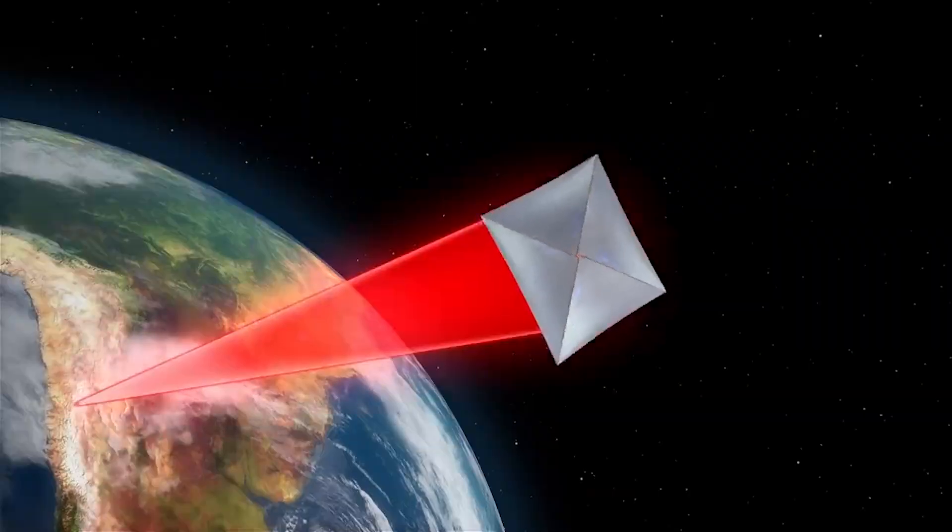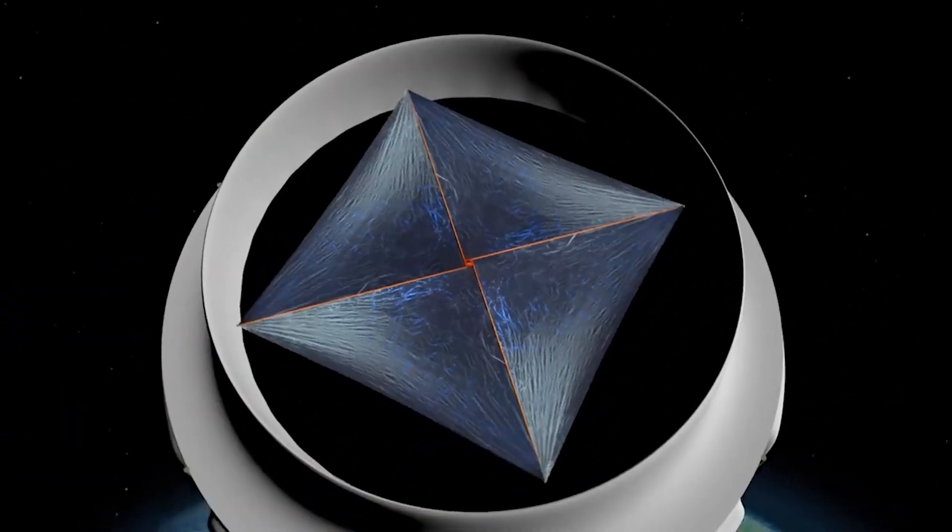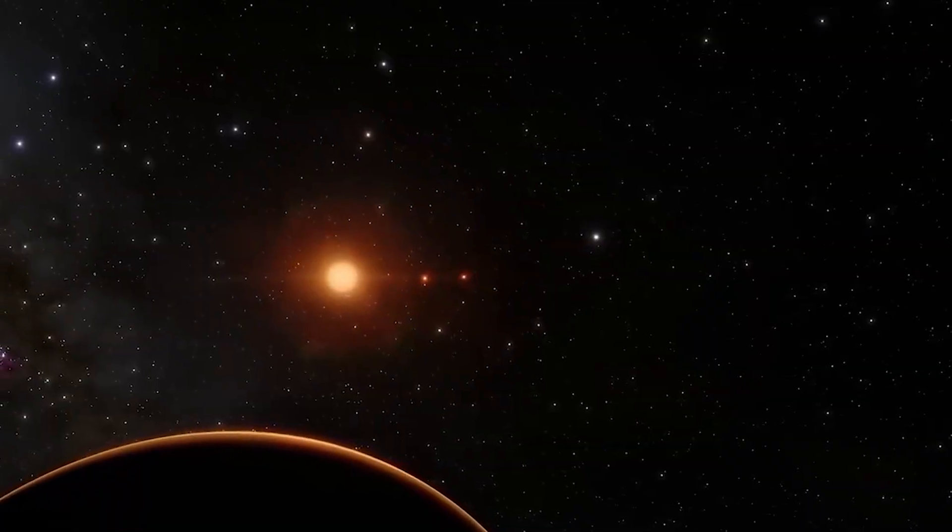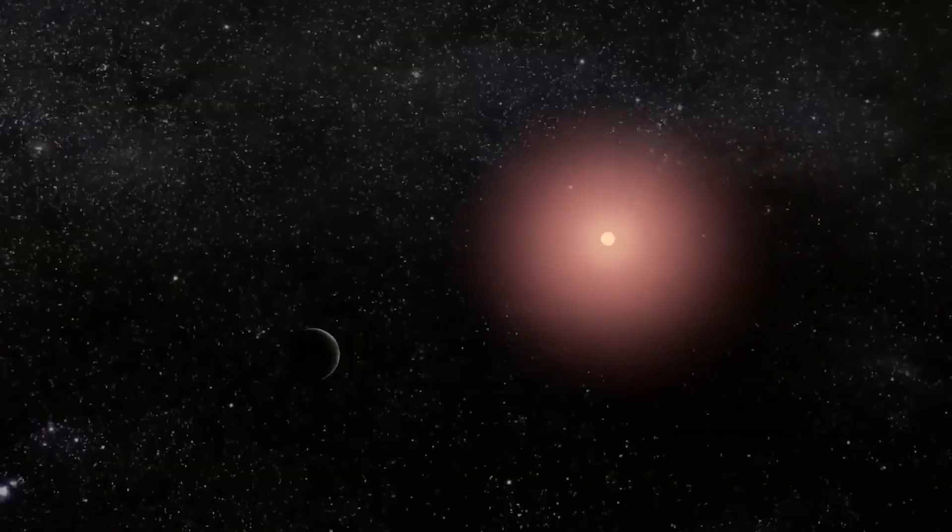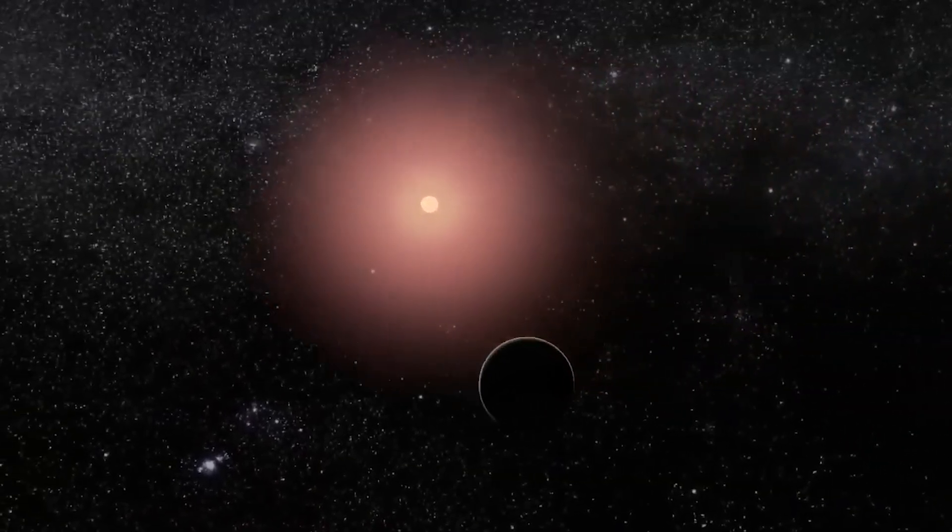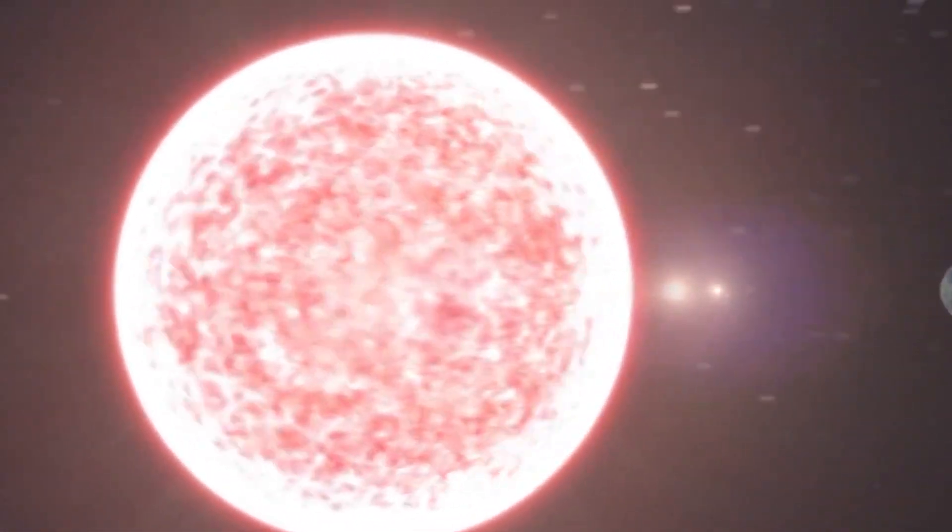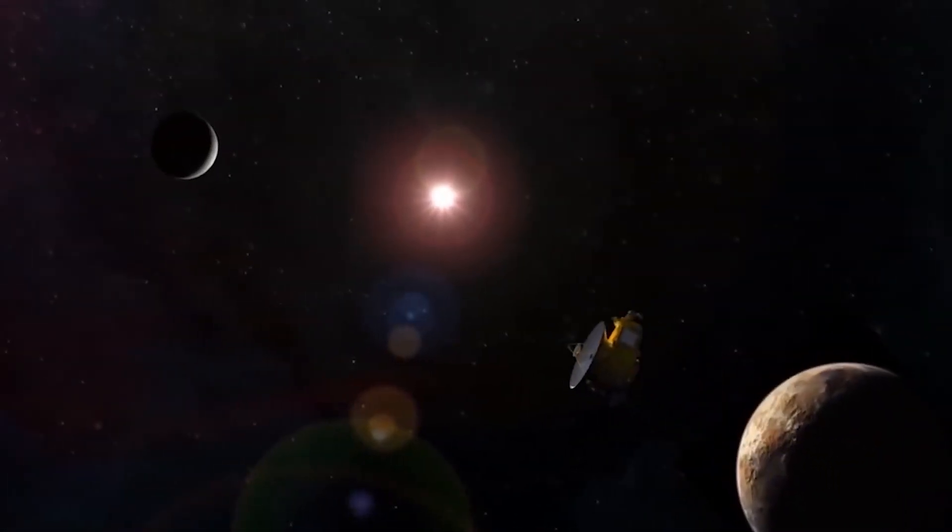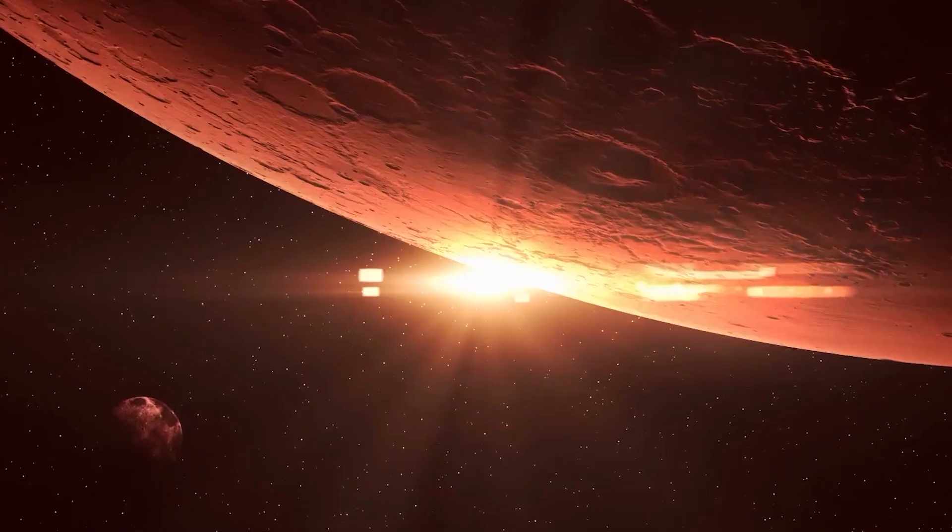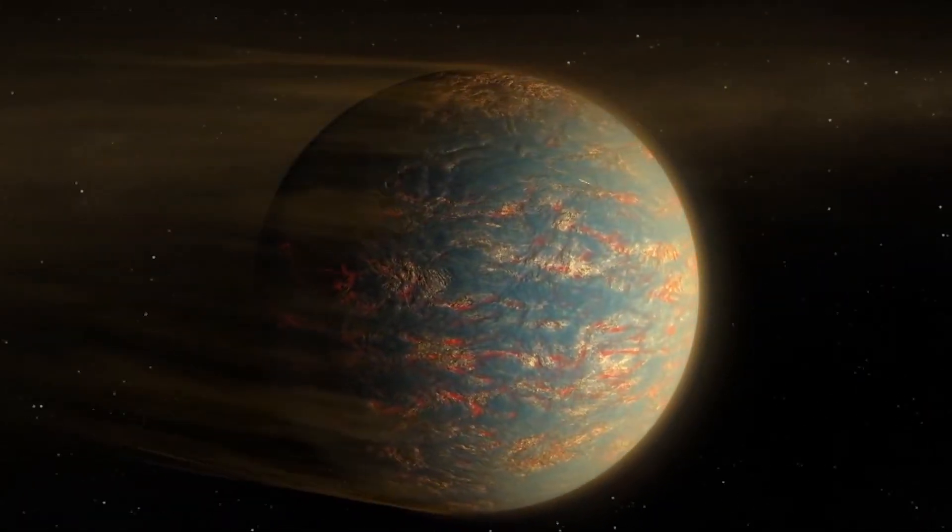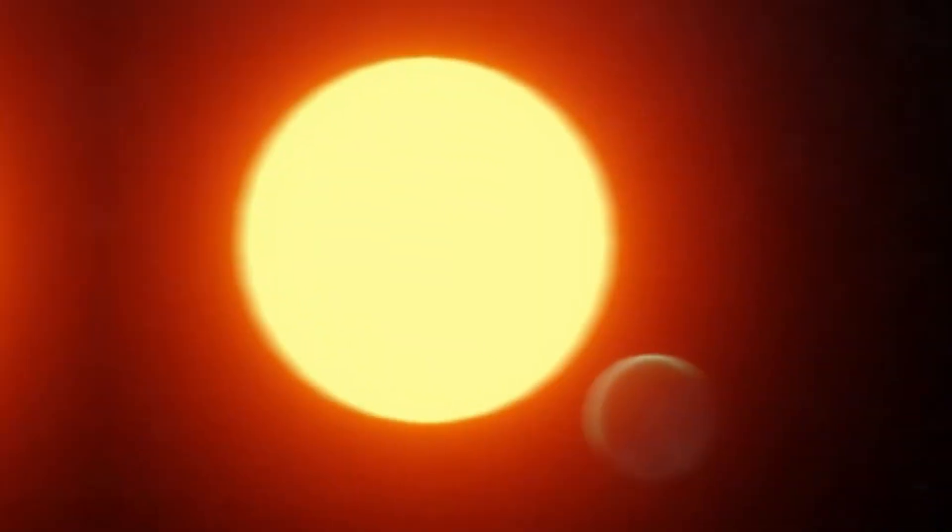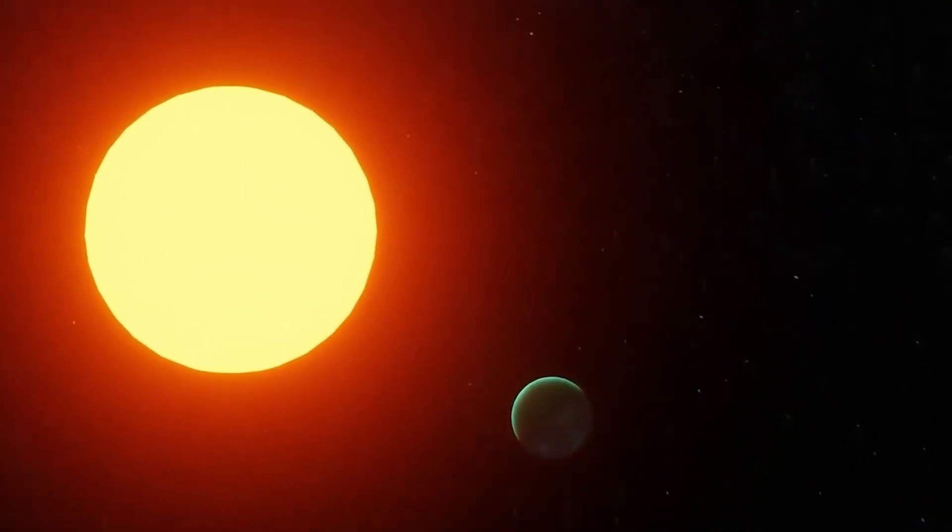One such probe has been tagged the Breakthrough Starshot Project, which is supposed to help us understand Proxima b and Proxima Centauri a lot better, given the impracticability of sending a human crew mission. However, such a mission is still centuries away from being properly articulated, because with the technology we have at present, it will take 75,000 years to get close enough to the Alpha Centauri system, which is also a binary star system.